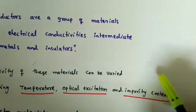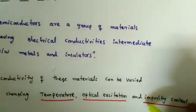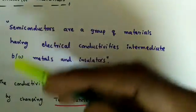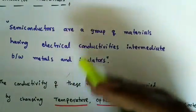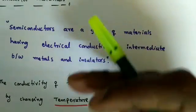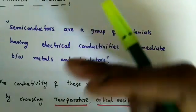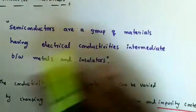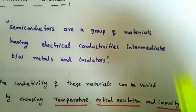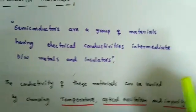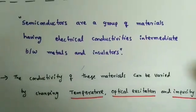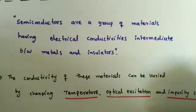What is impurity content? When you add some impurity to the semiconductors, we can produce some electrons or holes. When electrons or holes are moving, the conductivity increases — we can say current is flowing. So those are the three ways the conductivity of a semiconductor can be varied.